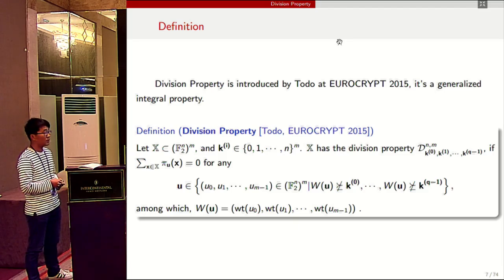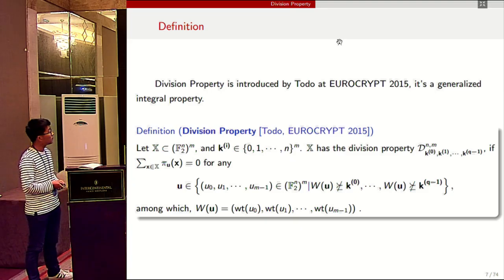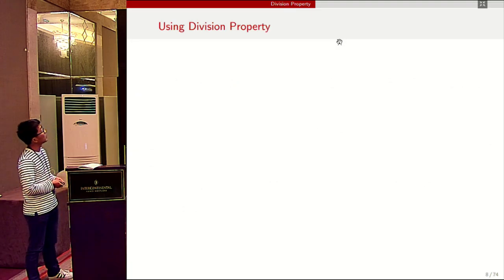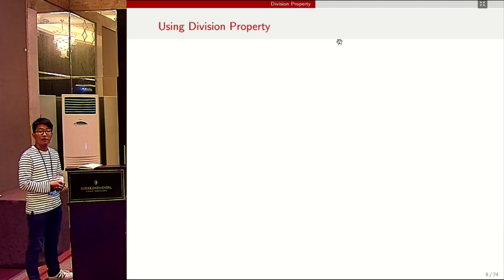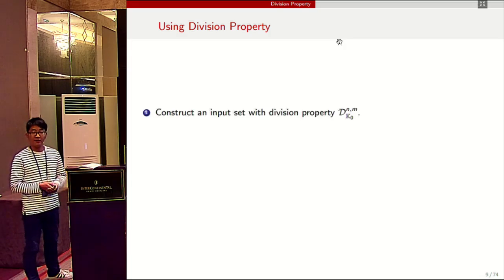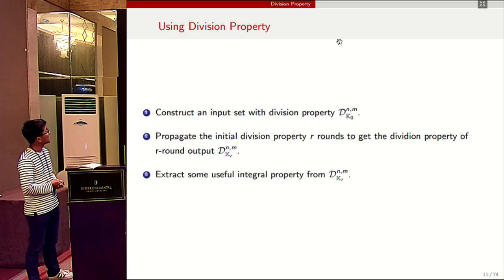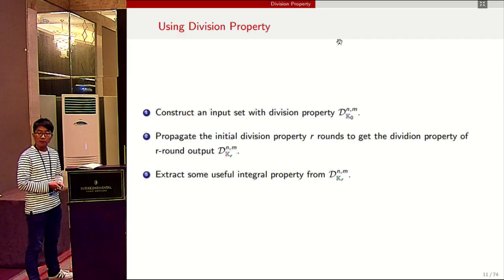In this expression, wt represents the vectorial Hamming weight of u, and wt(u_0) represents the Hamming weight of u_0. With the help of division property, we can search integral distinguishers for block ciphers. Firstly, we construct an input set with division property D_{k_0}, then propagate the initial division property round by round to get D_{k_r}. At last, we extract useful integral properties from D_{k_r}.